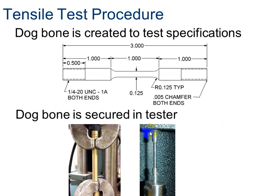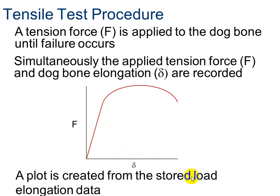We're going to see what happens to this metal under different amounts of force. This is kind of what your graph looks like when you're finished — it's this basic shape for every single material, but varies a little based on the material. The tension force is applied until failure occurs, which means it breaks. Simultaneously, the applied tension and elongation of your material are recorded, and this is the plot that's created.